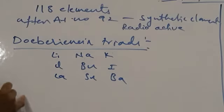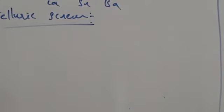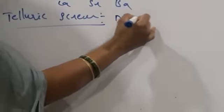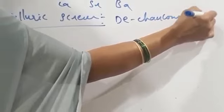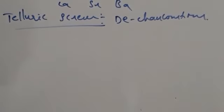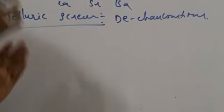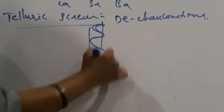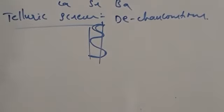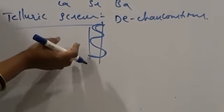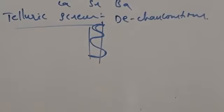Next is the telluric screw classification, made by de Chancourtois. He arranged the elements in the increasing order of their atomic weight and framed a helical type of periodic table — arranging elements in the form of a helix, in a cylindrical form. Here also, the basis for classification is atomic weight.